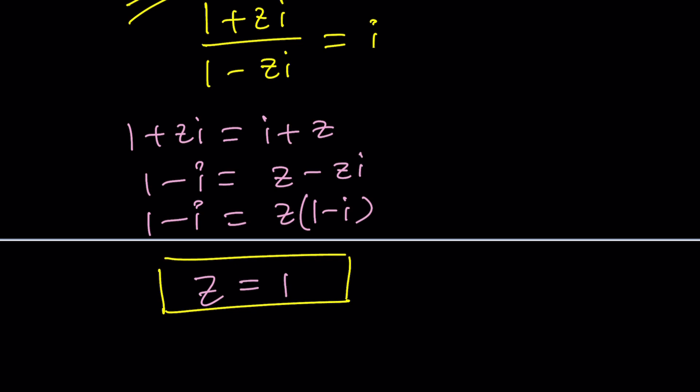One thing to keep in mind: if you knew 1 plus i over 1 minus i equals i, then this problem would be fairly easy. At least you would know z equals 1 is a solution. Can this equation have more than one solution? I don't think so because it's linear.